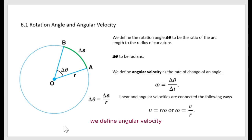We define angular velocity as the ratio of change of angle. Omega equals delta theta over delta t.